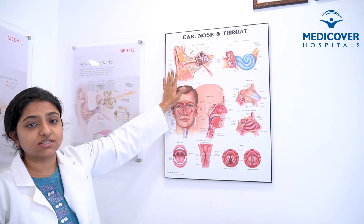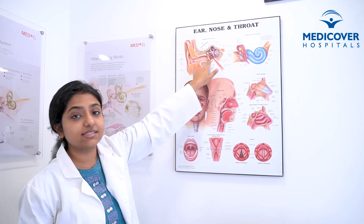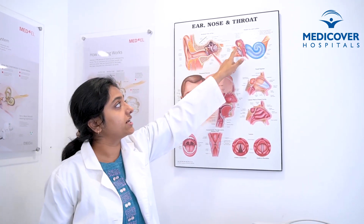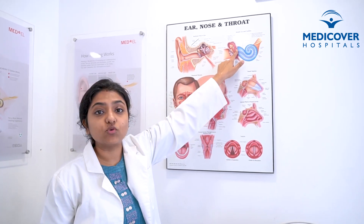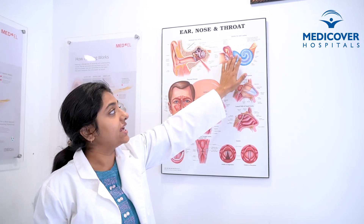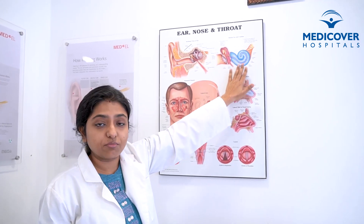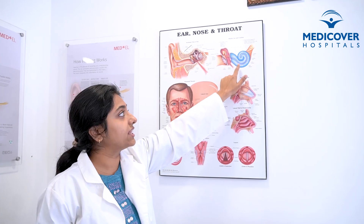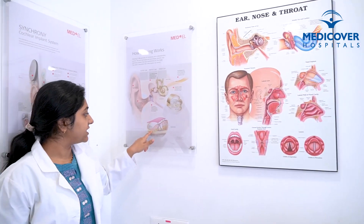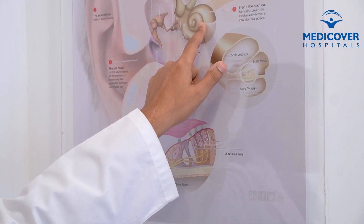How does sound travel? Sound is nothing but a vibration energy. It travels and hits the ear drum, and the same vibration will be carried out by these three tiny bones in the middle ear. Then it will reach the inner ear. The inner ear has some fluid inside, and with the vibration the fluid will move and that movement will be sensed by this particular membrane.